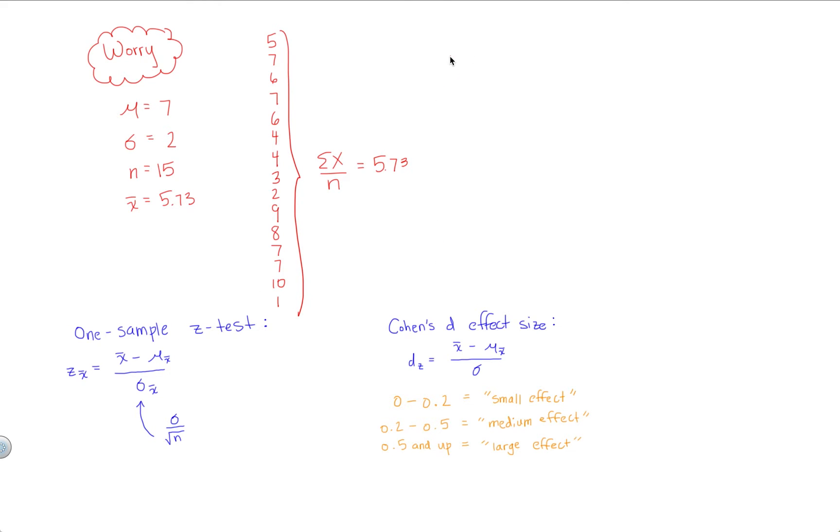So let's start with the actual hypothesis test. Here, z sub x bar is going to equal your sample mean that we just found, 5.73, minus your population mean that you're comparing against, 7, divided by your standard error.